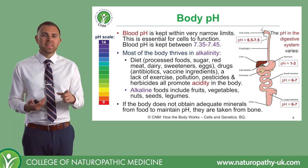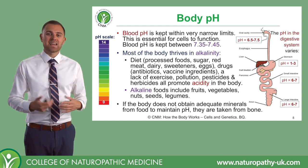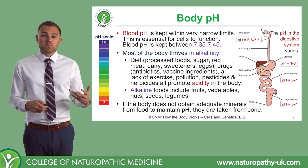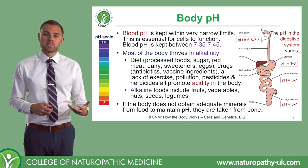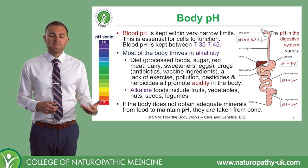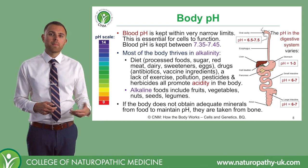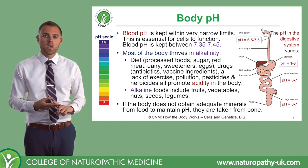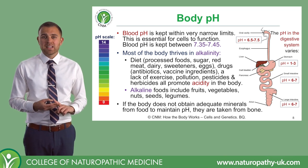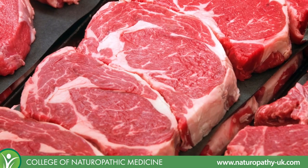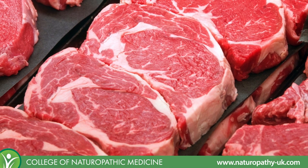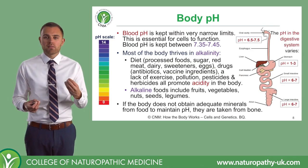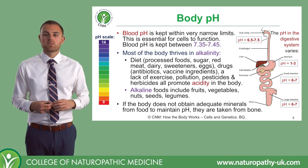What's interesting is when we think about what actually makes an acidic environment internally, because there are certainly many dietary factors that do this. If we think, for example, about processed foods, certainly refined sugars, red meats — particularly red meats that are not grass-fed, not organic — we know that the components of red meat generally will have more of an acidic effect on the body.